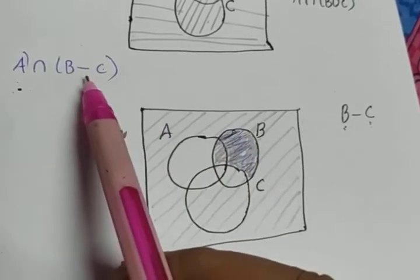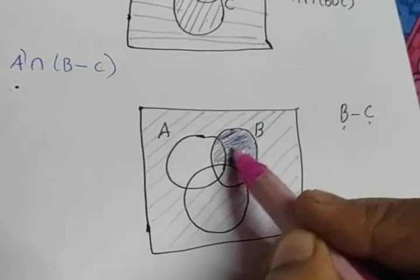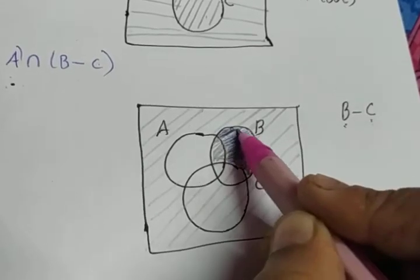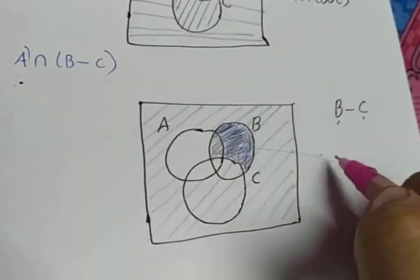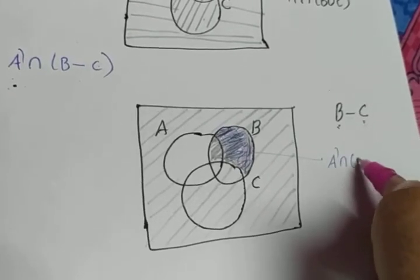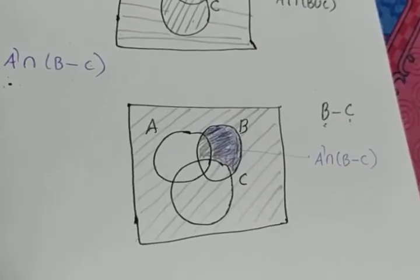We need A dash intersection B minus C. So, this much only, this blue colored shaded region represents A dash intersection B minus C.